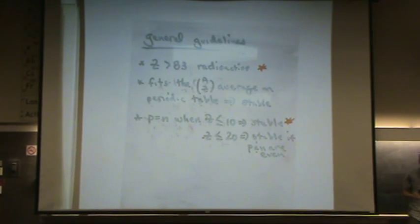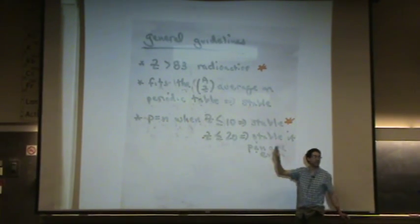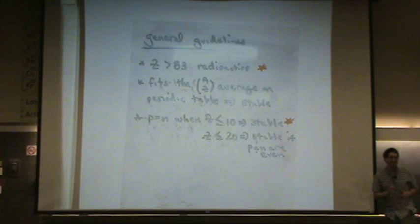So if the protons and neutrons are even numbers and Z is less than or equal to 20, the protons and neutrons are equal. Let me give you an example. Take calcium, calcium 40. Look on your periodic table, that's 20 protons, 20 neutrons.